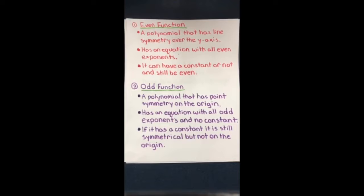So, just like a quick recap, an even function is a polynomial that has line symmetry over the y-axis. It has an equation with all even exponents, and it can have a constant or not and still be even. And for an odd function, it's a polynomial that has a point symmetry on the origin. It has an equation with all odd exponents and no constant.